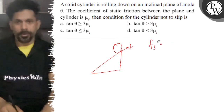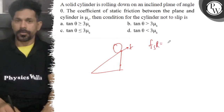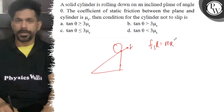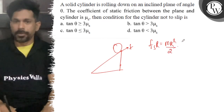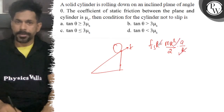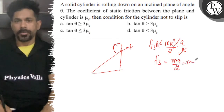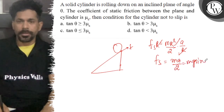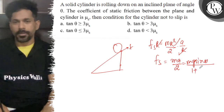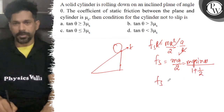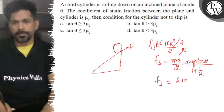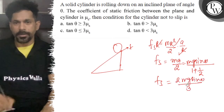We write the rotational equation: I times alpha. For a solid cylinder, I equals m r squared by 2, multiplied by alpha. Alpha can be written as a over r, so the terms cancel, giving static friction f = m a by 2. And m a equals g sin theta over (1 plus k squared by r squared), with k squared by r squared equal to 1/2, giving f static = 2 m g sin theta over 3.